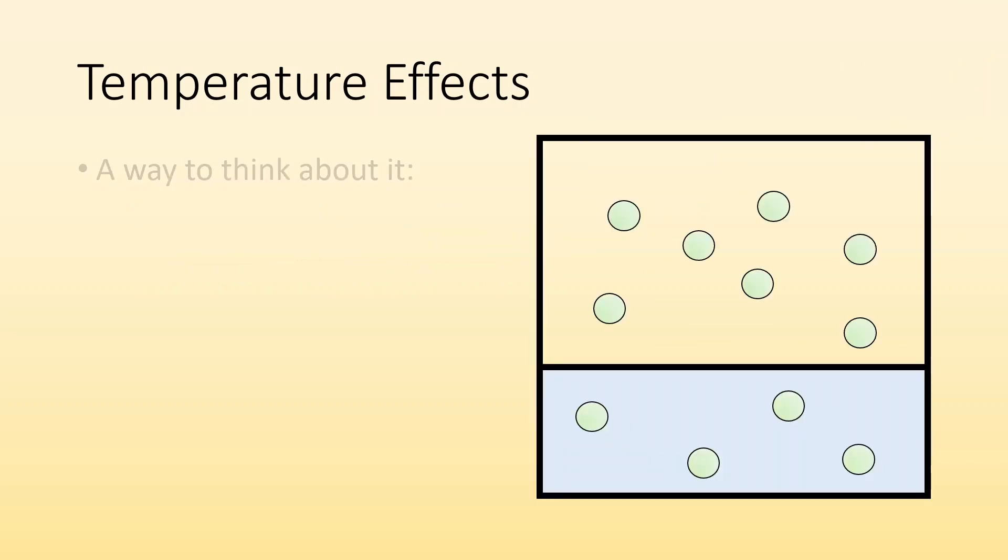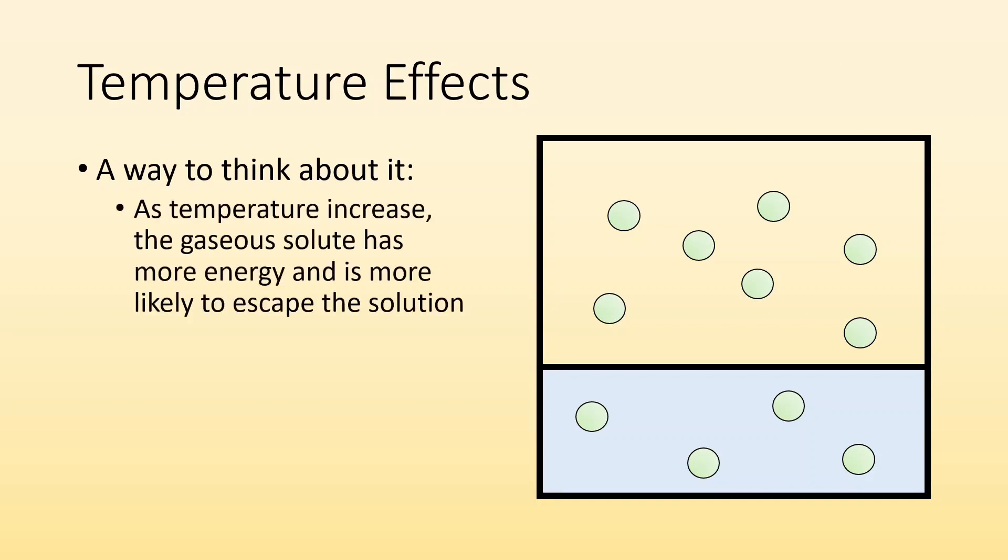If we think about it for gases, gases like to spread out and be in the gas phase. They're not so happy being dissolved. As temperature increases, those gas solutes now have more energy and are more likely to get out of there. They have the energy to escape. Low energy, they're stuck in that solution, being held in, dissolved. But if you gave them more energy by heating them up, now they've got enough energy to escape. So the solubility goes down. What happens to warm soda? You leave your soda out too long, it goes flat. There's no more CO2 dissolved in it because the solubility went down because it got warmer.